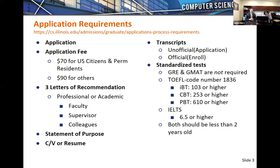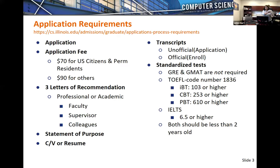This slide gives a quick overview of the application requirements. If you are a domestic student — a citizen or permanent resident — the application fee is $70. For all other students, the application fee is $90. This is all online. Three letters of recommendation can be submitted.